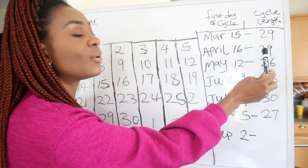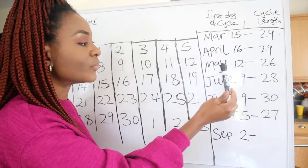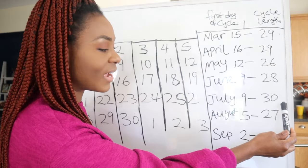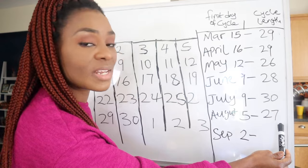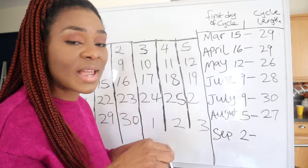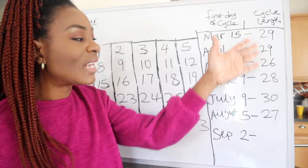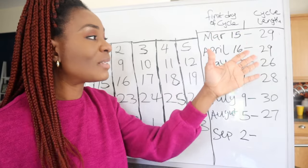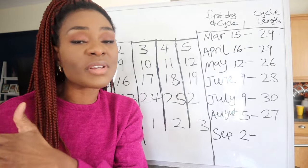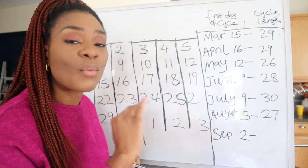May I had a 26-day cycle, June a 28-day cycle, July a 30-day cycle, August a 27-day cycle. Today is September 2nd and I am in a new cycle. What do you notice? These numbers are not the same — that means I have a varying cycle length. This video is for people with varying cycle length and a regular cycle.